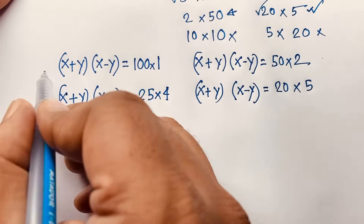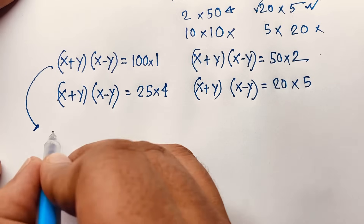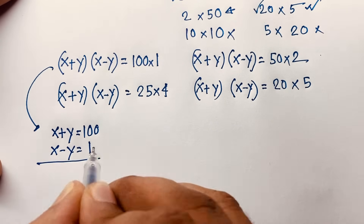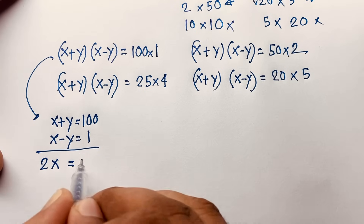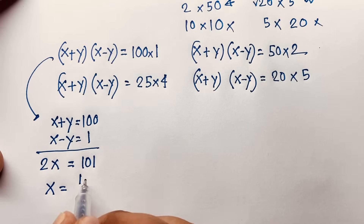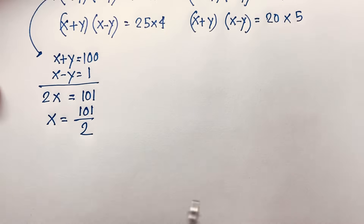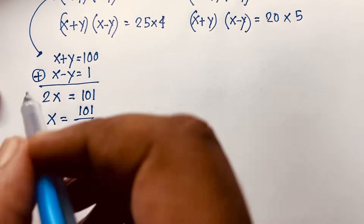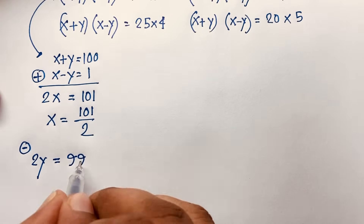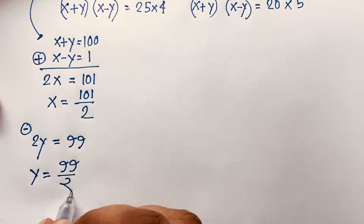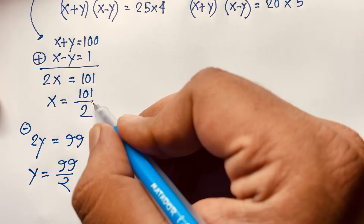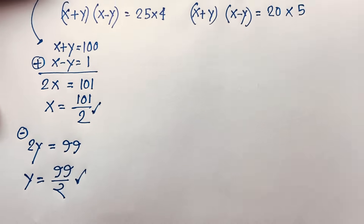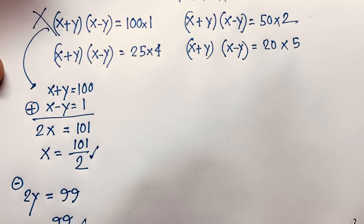For Case 1: x plus y = 100 and x minus y = 1. Adding both equations gives 2x = 101, so x = 101/2. Subtracting gives 2y = 99, so y = 99/2. Both results are fractions, not natural numbers, so Case 1 is rejected — it is not possible.